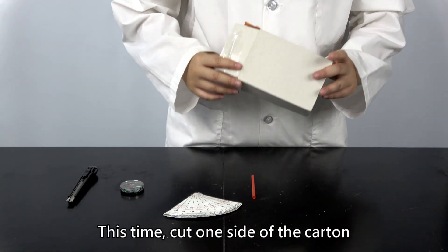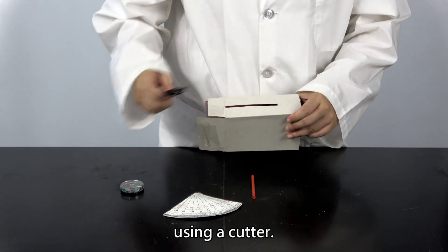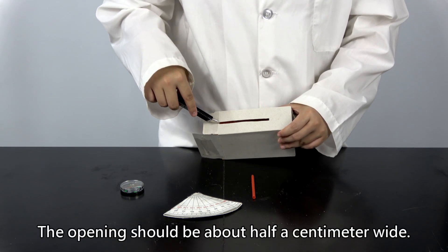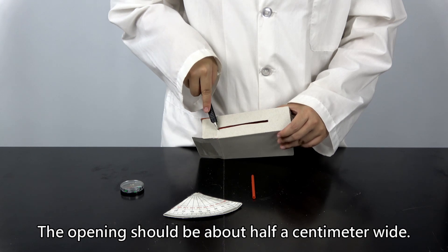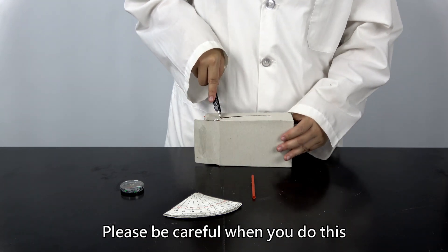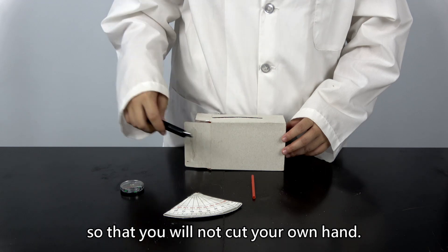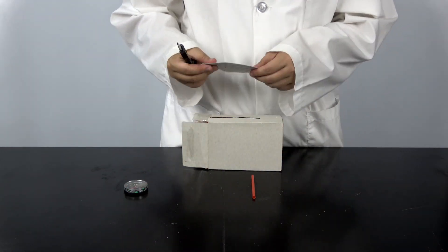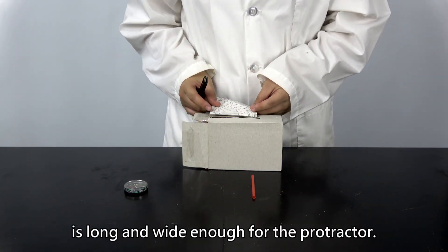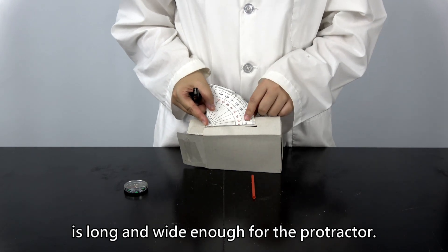This time, cut one side of the carton using a cutter. The opening should be about half a centimeter wide. Please be careful when you do this so that you will not cut your own hand. Check that the opening is long and wide enough for the protractor.